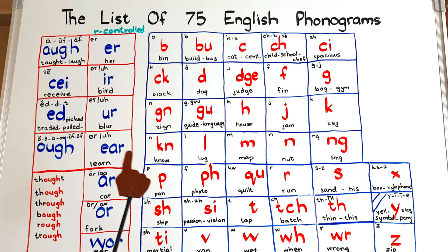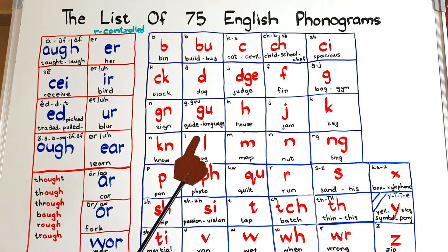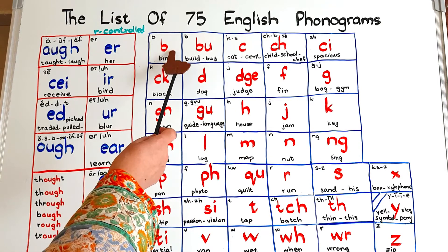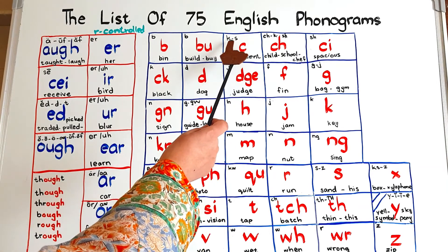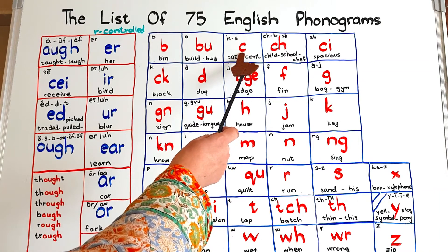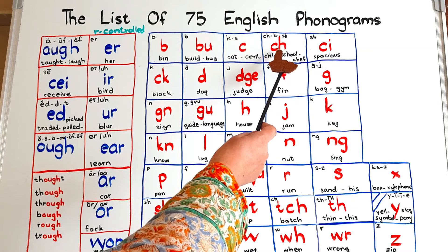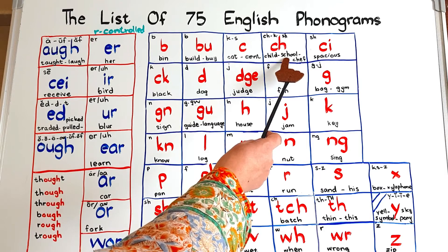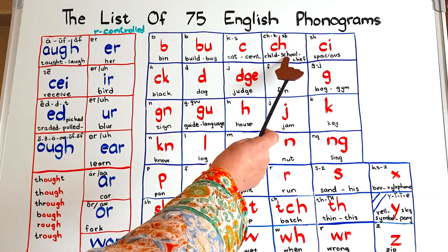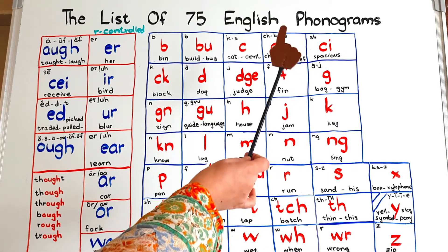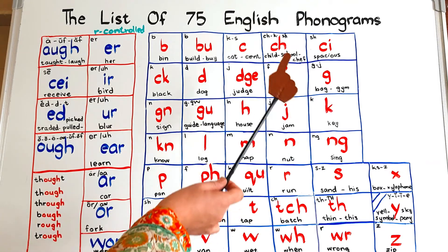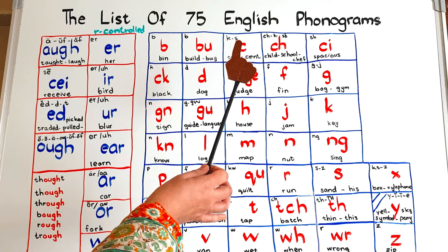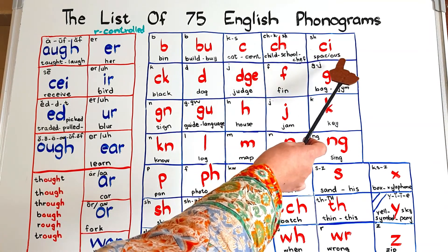Now let's come to the consonant phonograms. B as in 'bin'; BU together also say B as in 'build' or 'buy'. C says K and S as in 'cat' and 'send' — when C is followed by E, I, or Y it says the S sound. Phonogram CH says three sounds: CH as in 'child' (English origin), K as in 'school' (Greek origin), and SH as in 'chef' (French origin). The pronunciation of CH only depends on the word's origin.